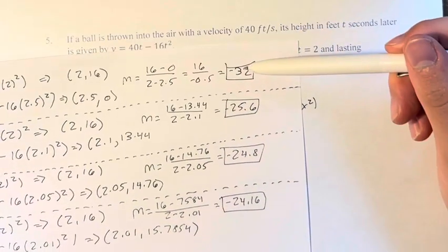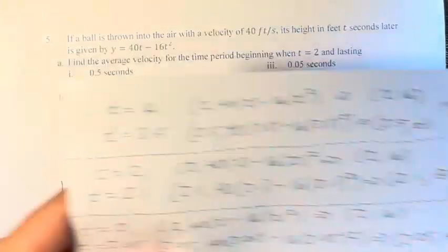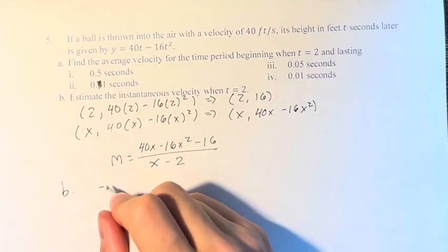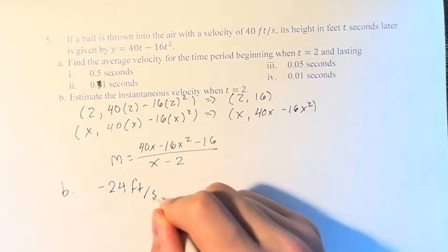And as we see here, they're going negative 32, negative 25, and so on, and they're approaching negative 24. So our estimate is going to be negative 24 feet per second.